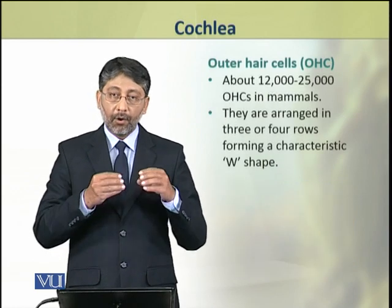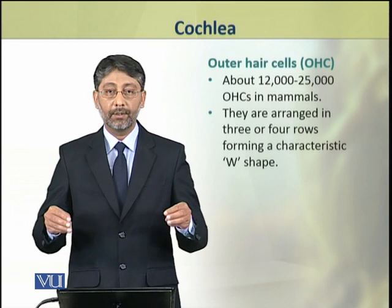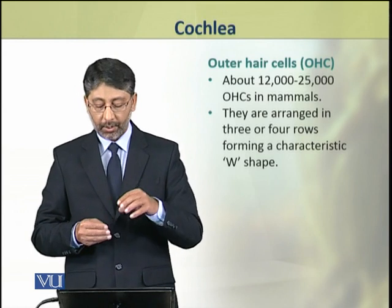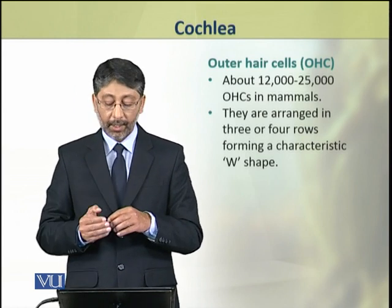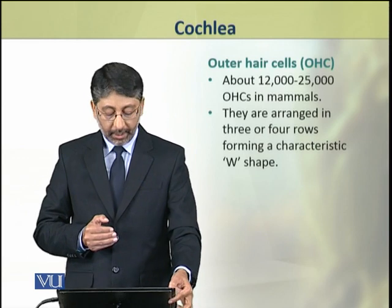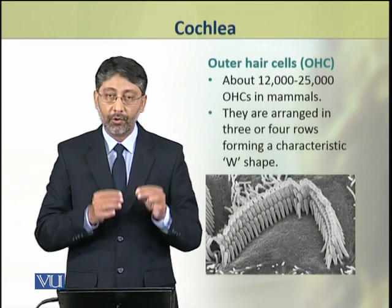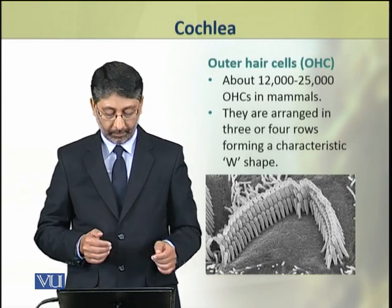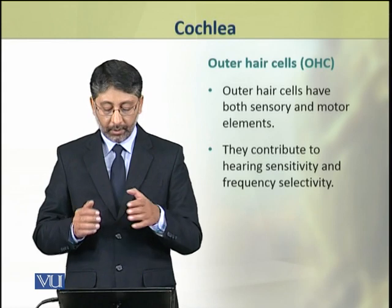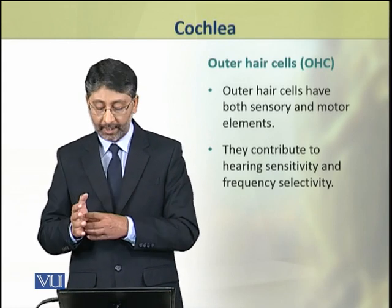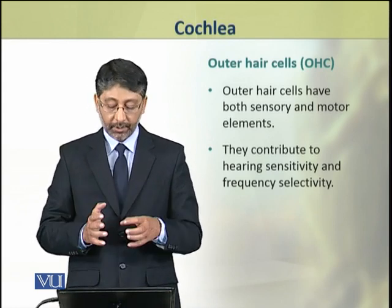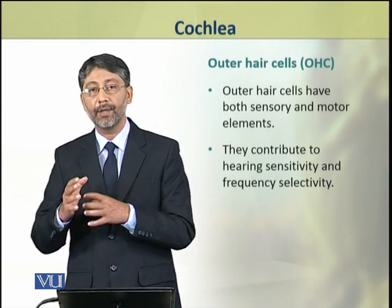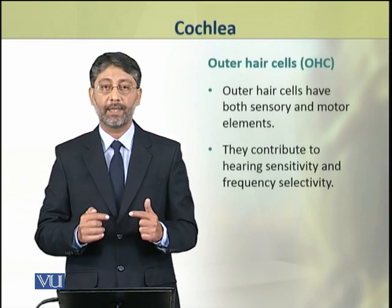The outer hair cells are more numerous in number, ranging from 12,000 to 25,000 in mammals. They are arranged in 3 or 4 rows and form a characteristic W shape. The outer hair cells have both sensory and motor elements, and they contribute to hearing sensitivity and frequency selectivity.